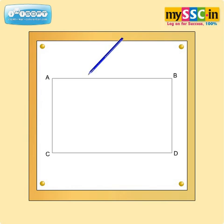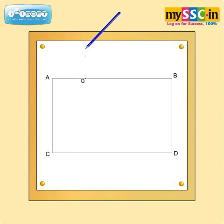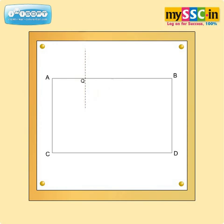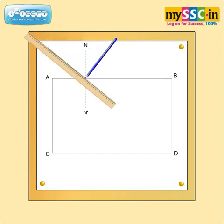Select a point Q on the line AB. Draw the normal N-dash through the point Q to the line AB. Draw the line PQ inclined at a suitable angle to QN, as shown in the figure.